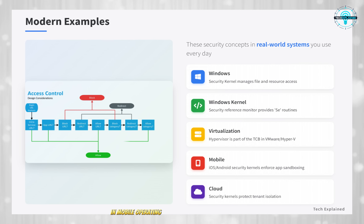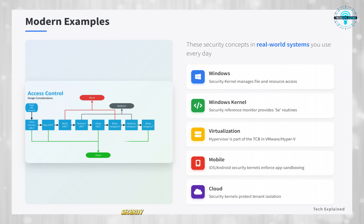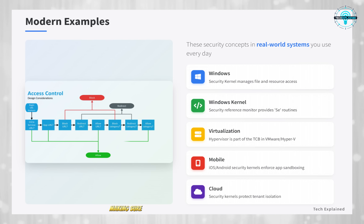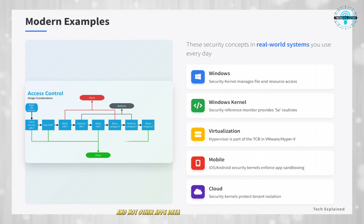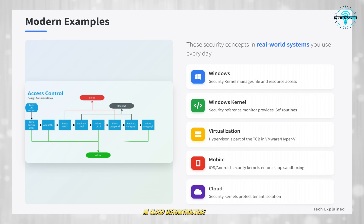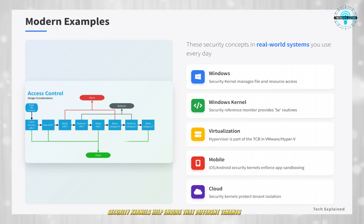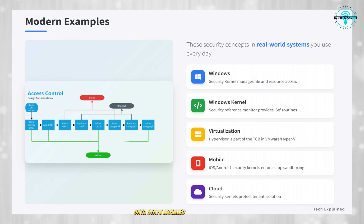In mobile operating systems like iOS and Android, security kernels enforce app sandboxing, making sure that apps can only access their own data and not other apps' data without permission. In cloud infrastructure, security kernels help ensure that different tenants' data stays isolated and secure.